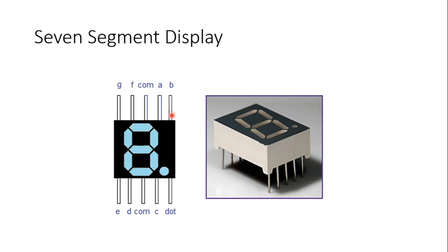The display has different terminals. For the A LED, there is terminal A. For B LED, terminal B. For C LED, terminal C. For D, terminal D. For E, terminal E. Then F and G. There is also a dot point terminal. Along with that, there are common terminals. These are all the terminals available with the 7-segment display.